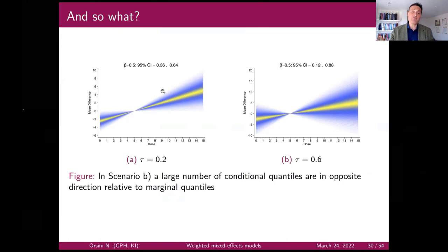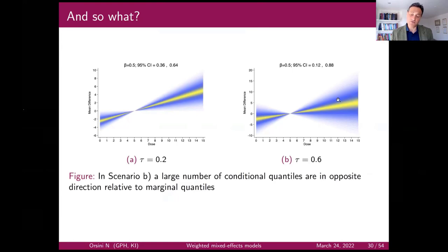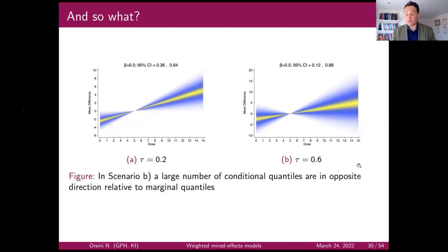You can have two situations where inference on the average study is pretty much the same, but in a situation with more heterogeneity across studies, it gives you another perspective. You can be precise on the average study inference, but the conditional quantiles may show that 40-60% of studies go in the opposite direction relative to the average study.